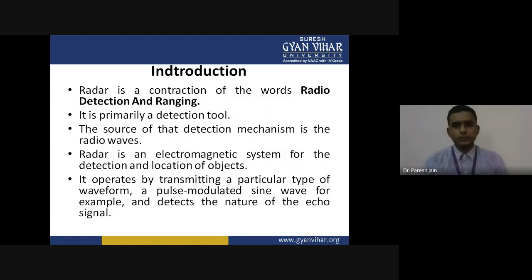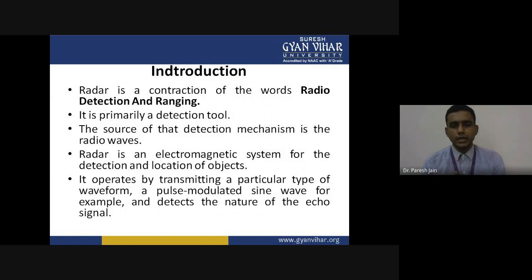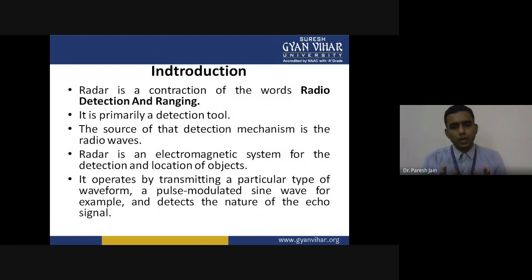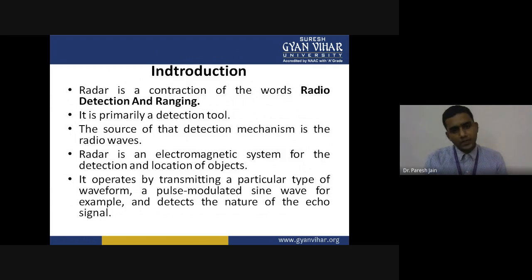Radar works on the concept of electromagnetic waves. It is basically designed as a system to detect and locate objects. In this operation, the radar system transmits a pulse — known as the transmitting pulse — generated by the magnetron source used in the transmitter. The basic concept of radar is to detect, find, and locate any object by detecting the nature of the echo signal.